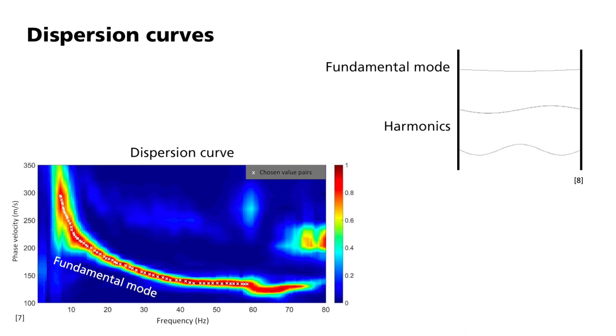while higher frequency components of 40 Hz are much slower paced at 150 m per second. Other areas with increased amplitudes here correspond to higher modes or overtones with higher propagation velocities.